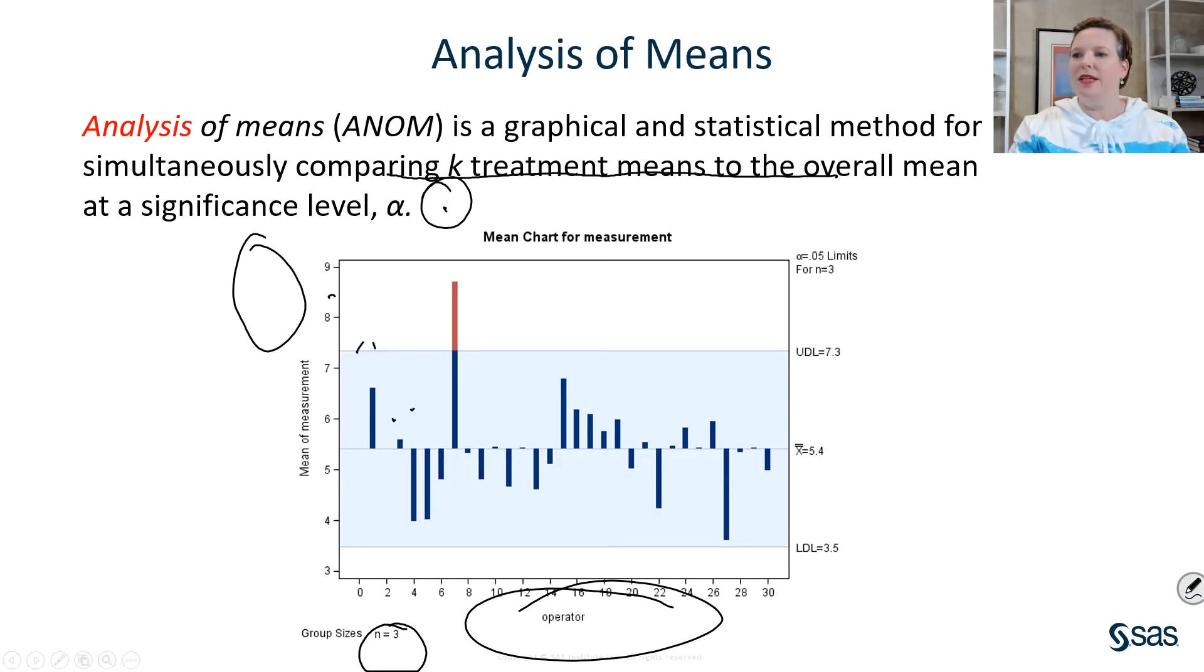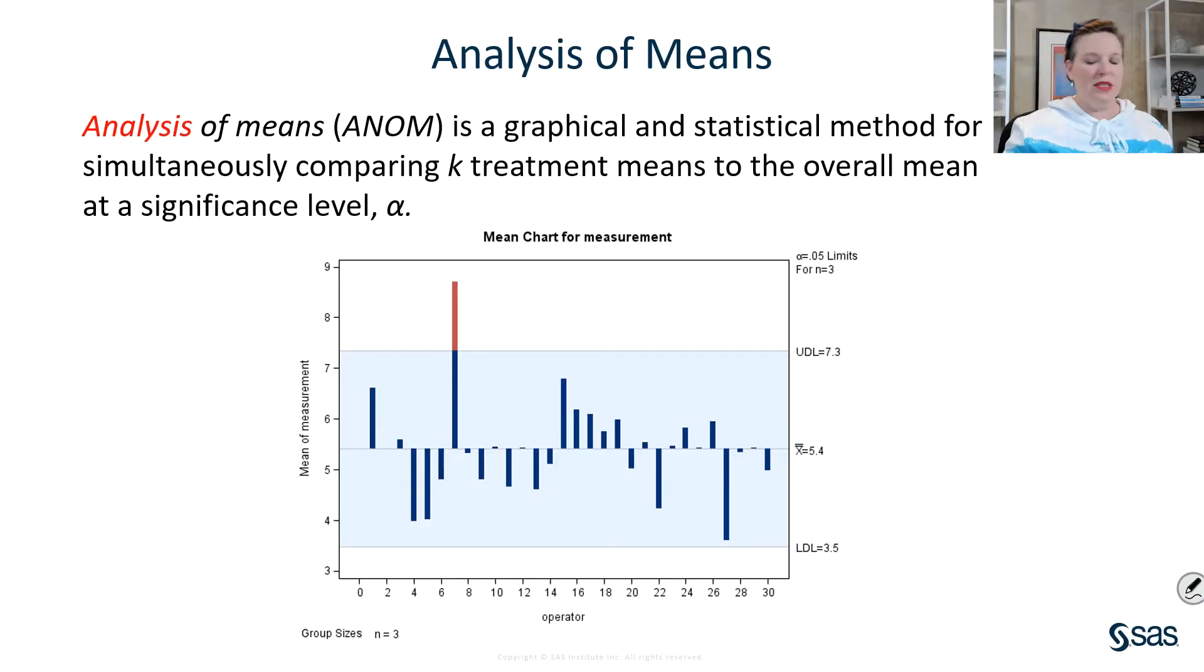Analysis of means comes in handy in this exact kind of situation. So analysis of means is a graphical and statistical technique for being able to compare k different treatment means to some overall mean at some significance level. So if you look at the picture that's on the screen now, you'll see that the same subgroup that was showing test 1 is now showing outside of, notice these aren't control limits anymore, decision limits at a specified alpha, right? And that's how analysis of means, or ANOM, works. And this is for operator number 7. So, what's going on with operator 7?